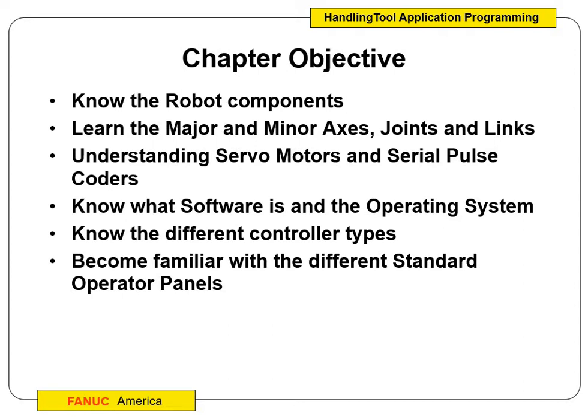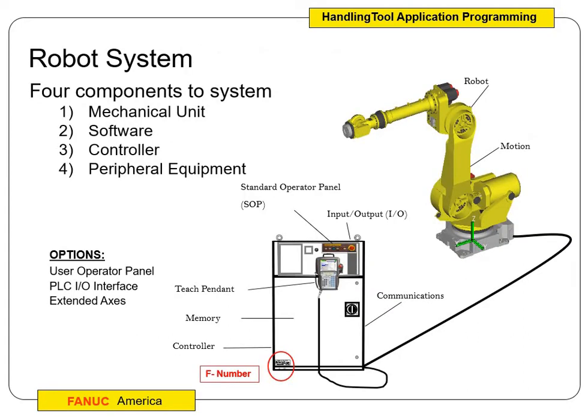We're going to talk about what the major axes are and the minor axes, the joints, the links. We're not going to get into servo motors — we've talked about that in our motor control course or in digital electronics. So we're not going to get into the details of servo motors and pulse encoders, but we should know about them. We'll also cover the software, the operating system, and different controller types we have in the classroom.